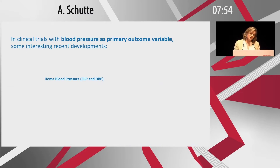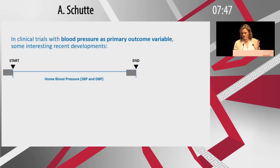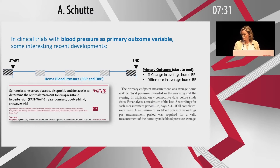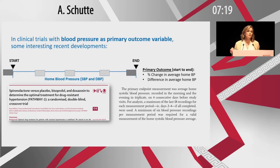Home blood pressure is another good alternative primary outcome variable. It's often done for several days at the start and end of the trial, and can also be done during the trial, though those readings are not often used in primary outcome calculations. Change or difference in average home blood pressure is used. The Pathway 2 trial used average home systolic blood pressure measured in the morning and evening in triplicate, then averaged — reducing the effect of snapshots and accounting for variability.